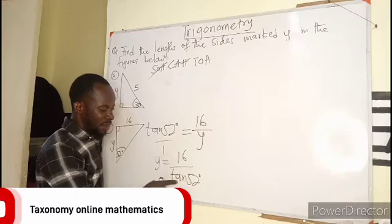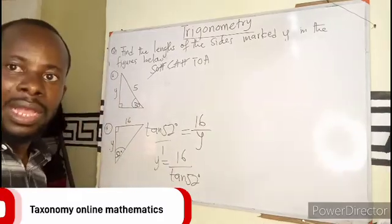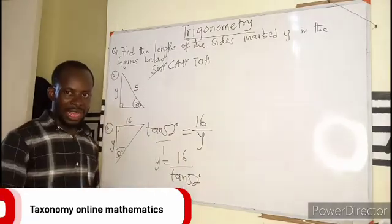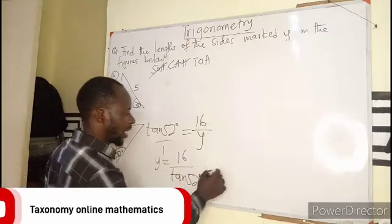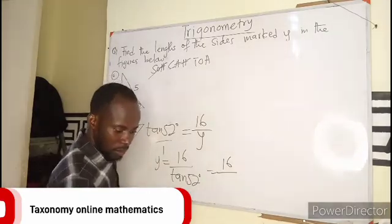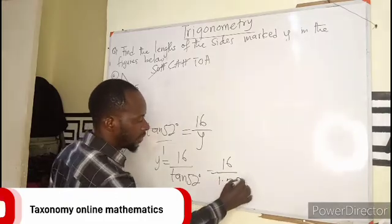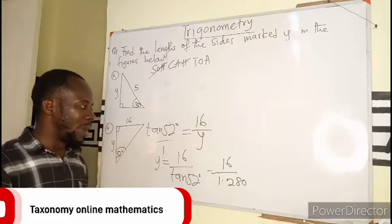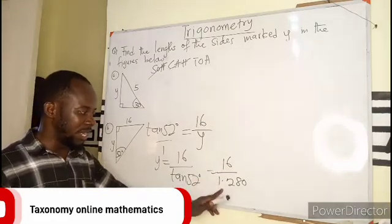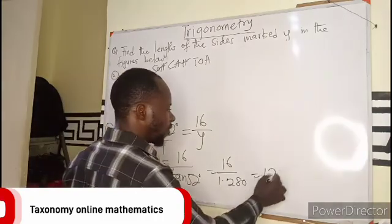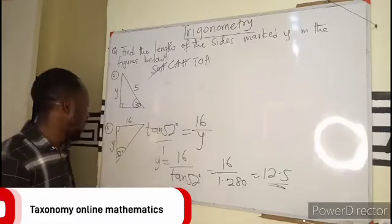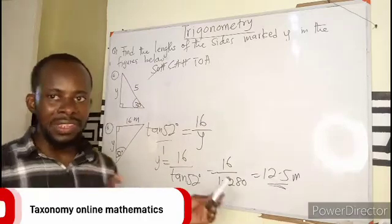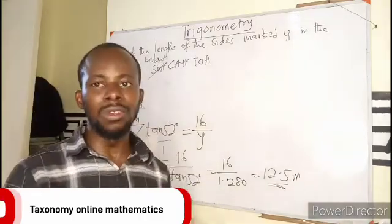Then 16, you find tan 52. Press the tan on the calculator, then press 52. That will give you 1.280, 1.2997. If you approximate to 1.280, now 16 divided by this will give us 12.5. So if we were to have a dimension to be meter, this could have been 12.5 meter. You can see how easy it is to solve questions on trigonometry. This is just a direct aspect of trig.